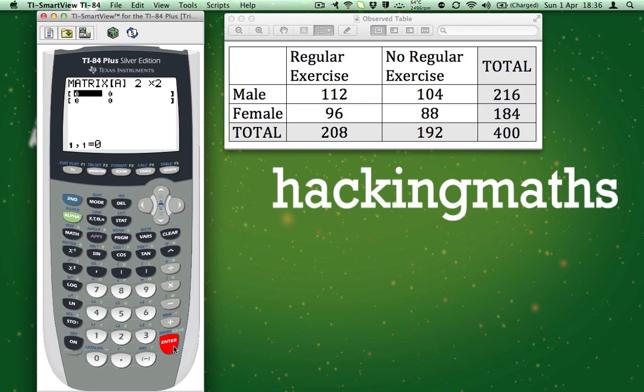We need to put the values into the observed table on the calculator. So we just type the numbers in and press Enter after each one. Now that you have filled in the table, we can calculate the chi-squared value.